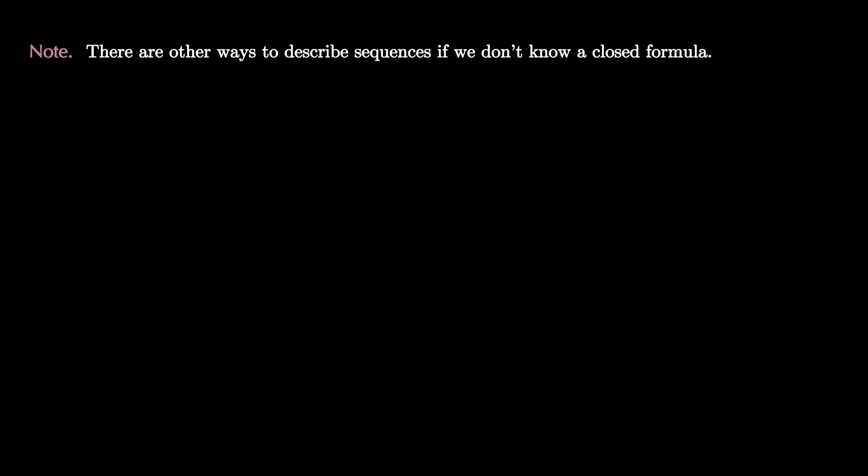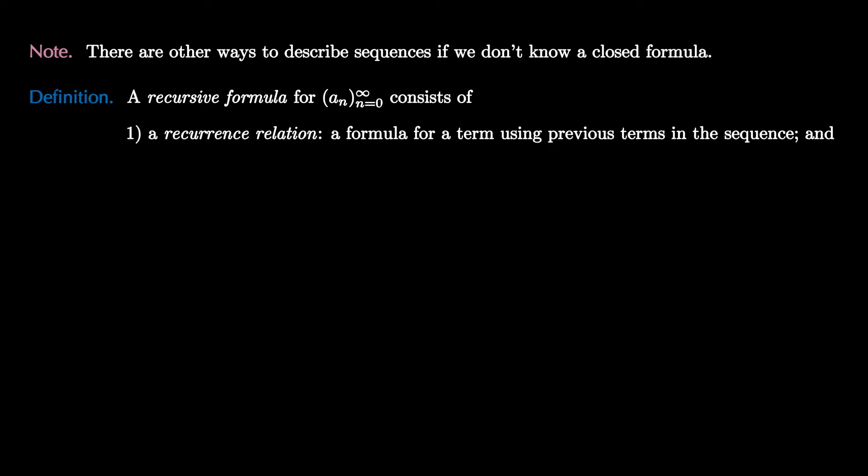Sometimes we can't find a closed formula, but we may be able to find other ways of describing the sequence such as a recursive formula. A recursive formula for a sequence consists of two things. First, a recurrence relation, which is a formula for a term using previous terms in the sequence. And second, we need a list of initial conditions, which is a list of the first few terms of the sequence, enough to use in the recurrence.